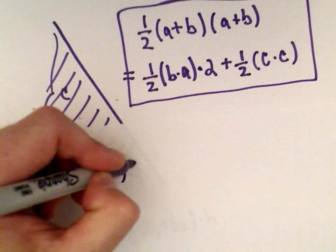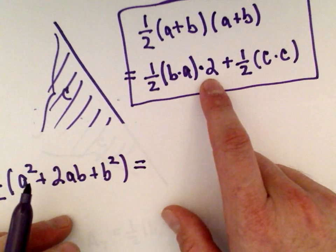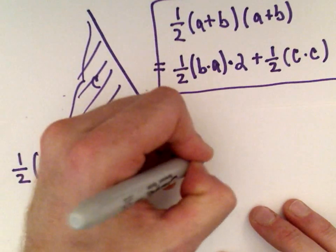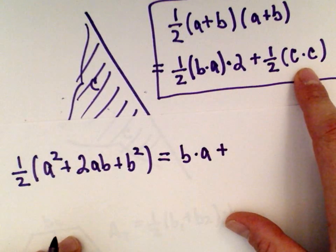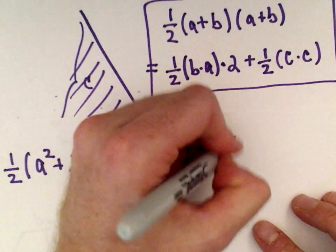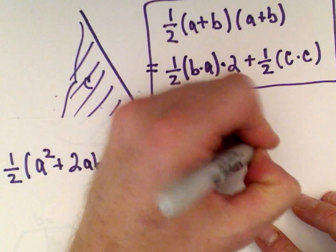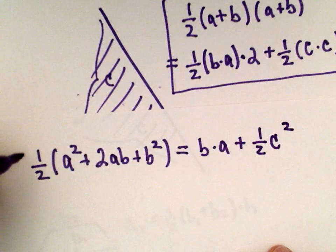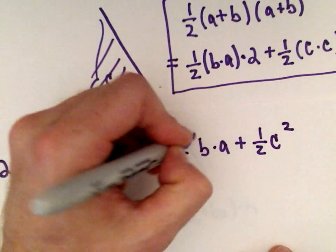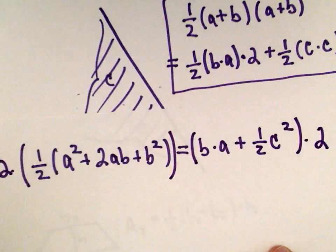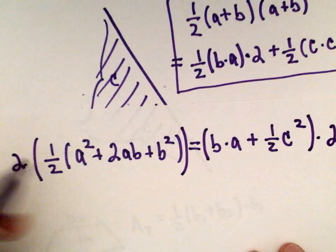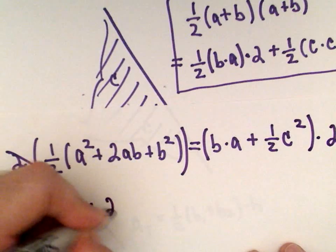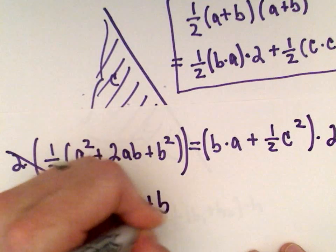On the right-hand side, we would have one half times 2, which is just 1, B times A. And then we've got one half times C times C, so that's going to be one half times C squared. Now let's simplify this. If we multiply both sides of this equation by 2, just to get rid of the fractions. 2 times a half will cancel out, we'll just be left with A squared plus 2AB plus B squared.